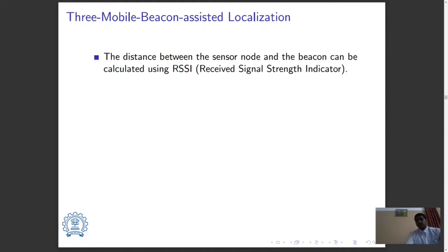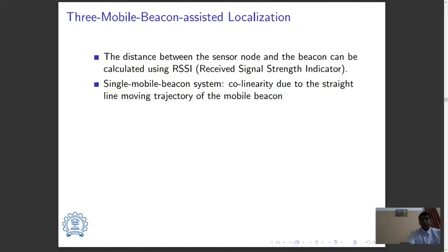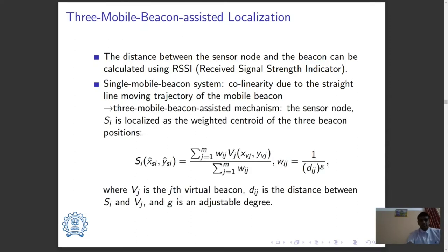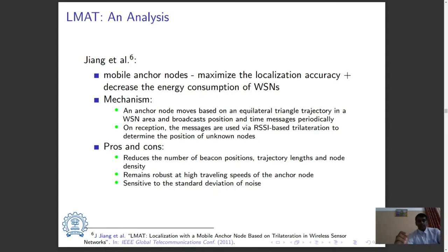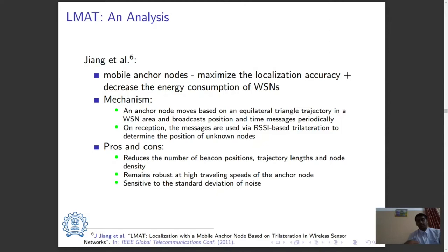The distance between the sensor node and the beacon can be calculated using RSSI — received signal strength indicator. Since a single mobile beacon system can have issues such as colinearity due to the straight-line moving trajectory of the mobile beacon, a three mobile beacon assisted mechanism is suggested. The object — that is, the sensor node SI — is localized as the weighted centroid of three beacon positions. Jiang and others propose using mobile anchor nodes to maximize localization accuracy while decreasing energy consumption; an anchor node moves based on an equilateral triangle trajectory and broadcasts position and time messages periodically, used via RSSI-based trilateration to determine the position of unknown nodes.